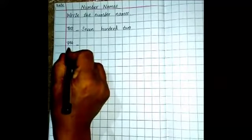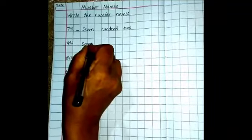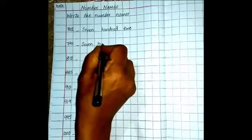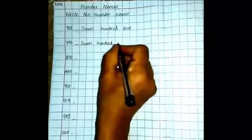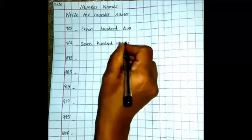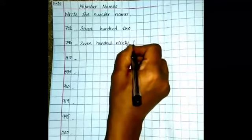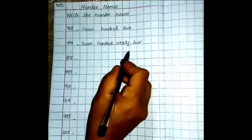Okay, next number is 794. S-E-V-E-N-7, H-U-N-D-R-E-D-100, write 90, N-I-N-E-T-Y-90, then write 4, F-O-U-R-4. 794.